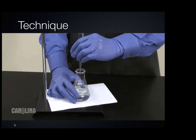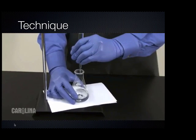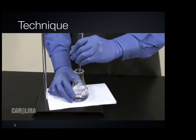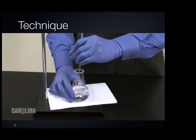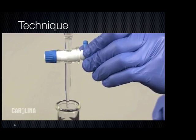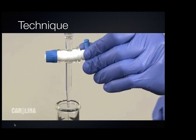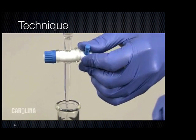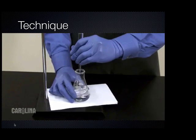Operating the burette requires two hands. One hand turns the stopcock while the other hand swirls the flask. Practice turning the stopcock a few times to familiarize yourself with how quickly the flow starts and stops.